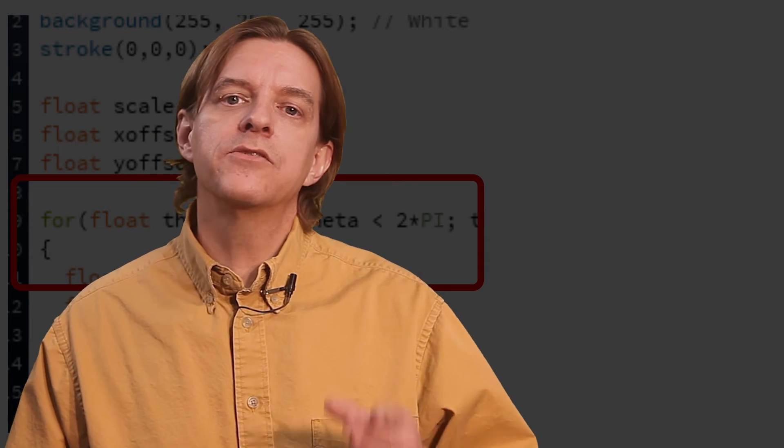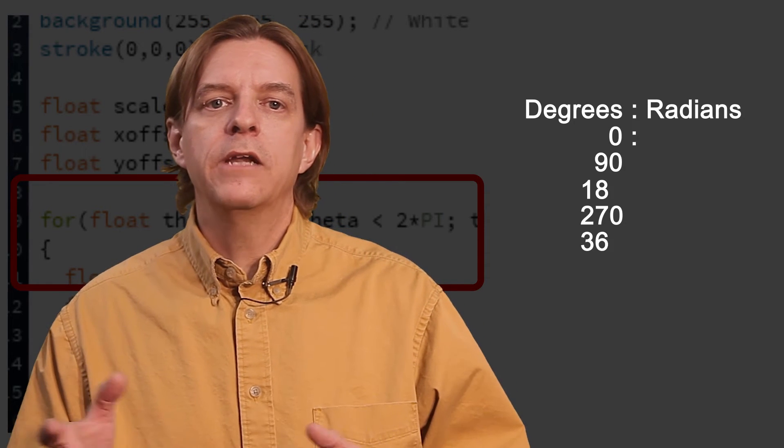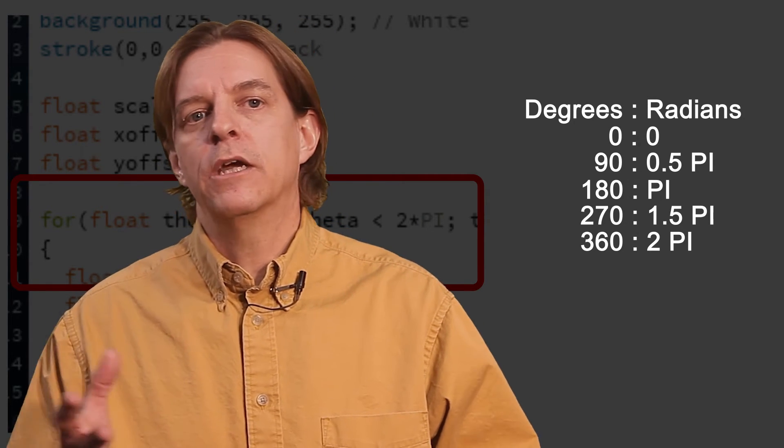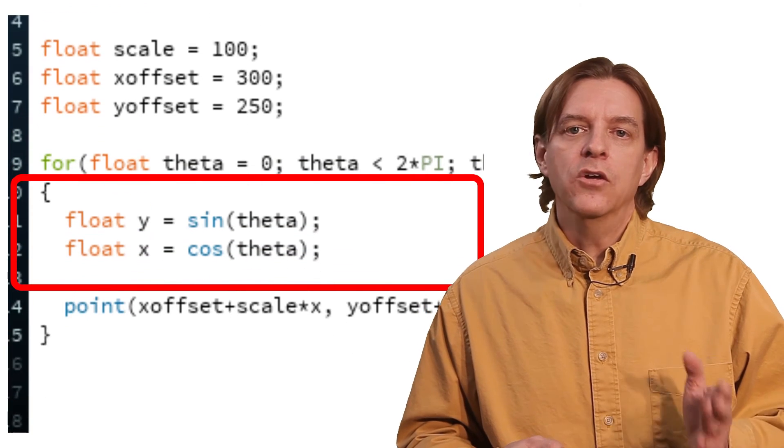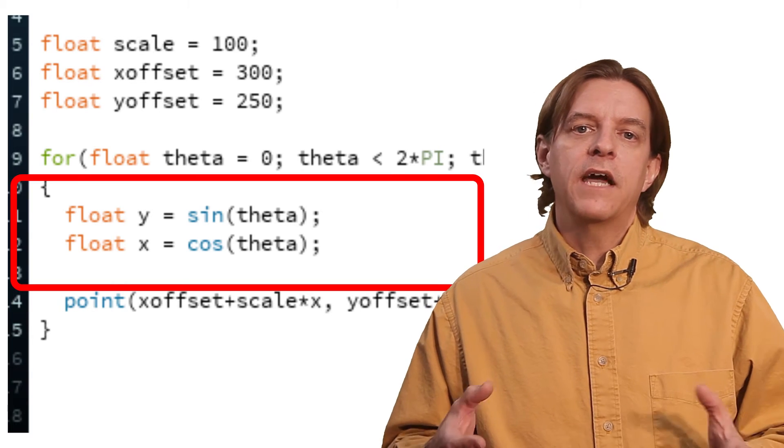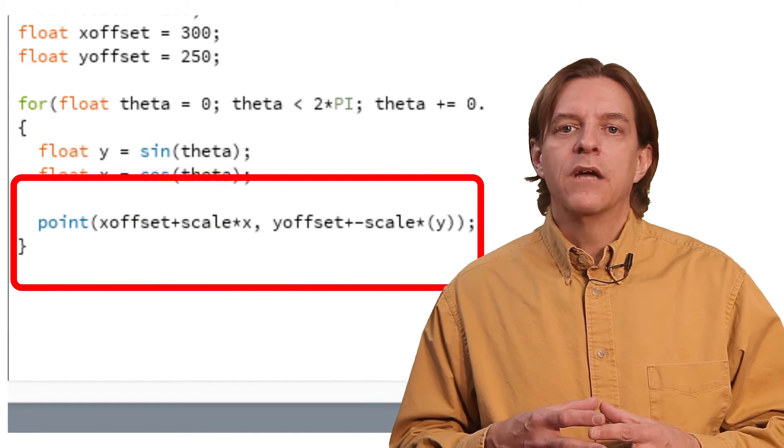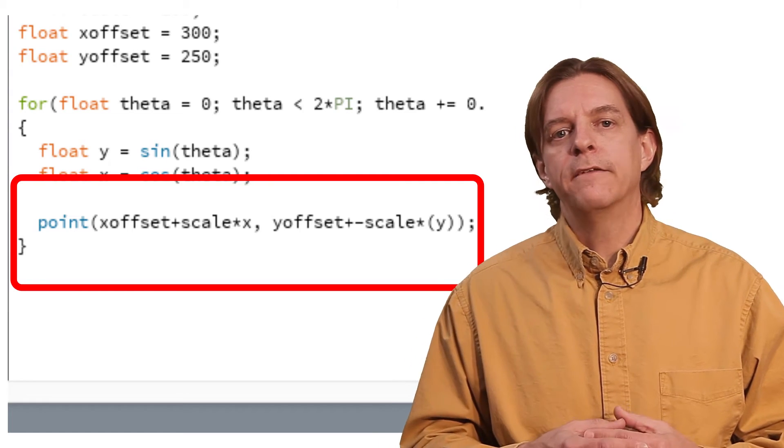This is just fine though because there's a one-to-one mapping between degrees and radians, where pi is 180 degrees and 2 pi is 360 degrees. Inside the loop, we set x to the cosine value of the loop variable and y to the sine value of the loop variable. Then we're simply going to plot that point, offset and scaled by the previously defined values.